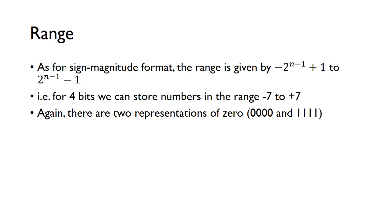The range for one's complement is the same as for sign-magnitude: minus 7 up to plus 7 for 4 bits. And again, we have two representations for zero — positive zero and negative zero, which is 1, 1, 1, 1 — where the 1 is for the negative sign bit, and the three zeros are inverted to give three ones.